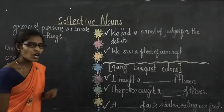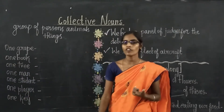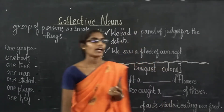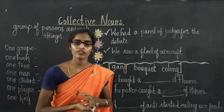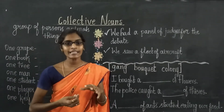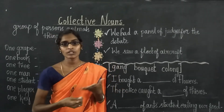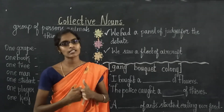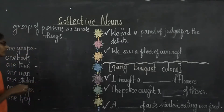Collective nouns are used to refer to a group of animals, a group of persons, and a group of things. One important thing — unlike other grammar topics, we don't have any certain rules for collective nouns. We have to memorize them, so try to memorize all the words.